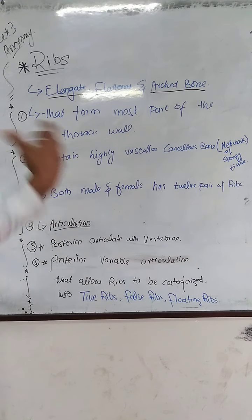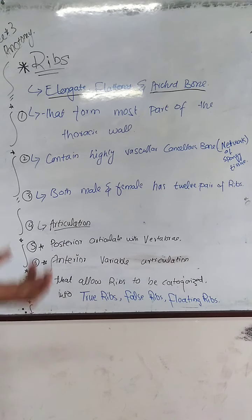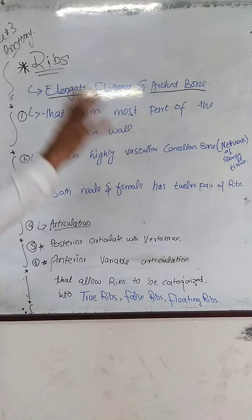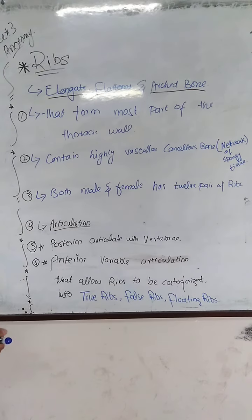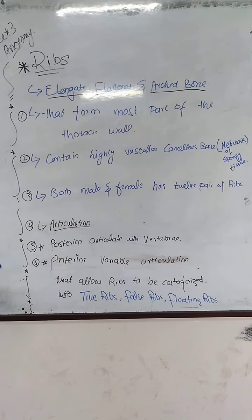There are types of true ribs, false ribs, and floating ribs. So today we are covering this new dimension. We use ribs — ribs is elongated.